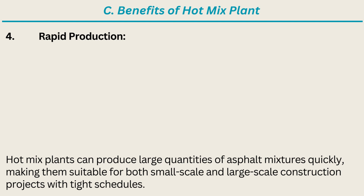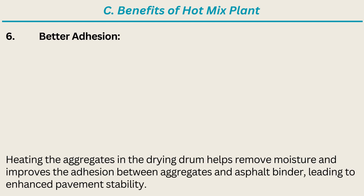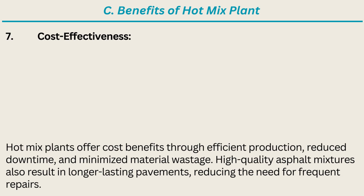Four, rapid production — hot mix plants can produce large quantities of asphalt mixtures quickly, making them suitable for both small-scale and large-scale construction projects with tight schedules. Five, consistent performance — the controlled mixing process ensures that each batch exhibits consistent performance characteristics, reducing the likelihood of inconsistencies in the finished pavement. Six, better adhesion — heating aggregates in the drying drum removes moisture and improves adhesion between aggregates and asphalt binder, leading to enhanced pavement stability. Seven, cost effectiveness — hot mix plants offer cost benefits through efficient production, reduced downtime, and minimized material wastage, with high-quality asphalt resulting in longer-lasting pavements.